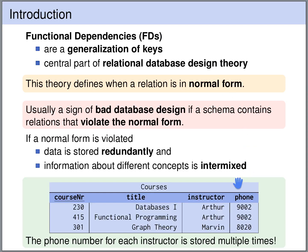Consider this table: courses. In this table we store for each course the course number, the title of the course, the instructor, and the phone number of the instructor. The instructor and the phone number form a functional dependency, because the instructor uniquely determines the phone number. You can see in this table that for instructor Arthur, we have the instructor Arthur appearing several times, and several times we have the phone number of Arthur. So here we have an example of redundant storage of information — the phone number of Arthur being 9002 is stored multiple times.